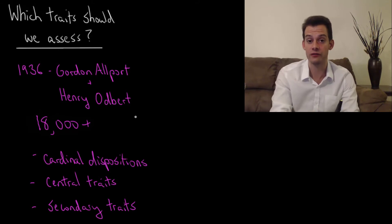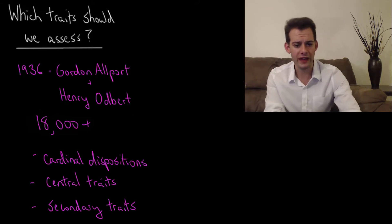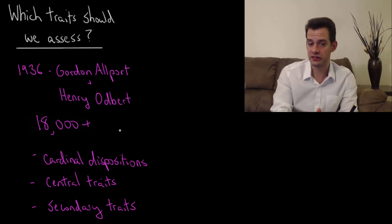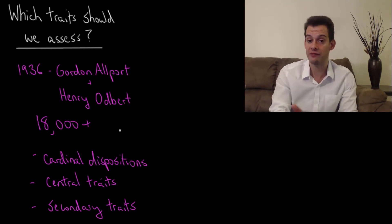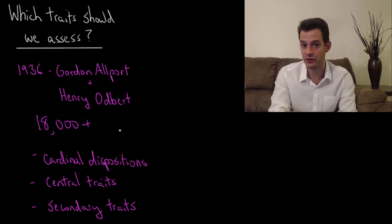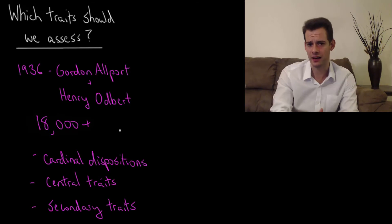Now within these 18,000 there were of course many synonyms and lots of overlap. Allport proposed that we could think about traits as being in a hierarchy in terms of how much they influence a person's personality. We could have cardinal dispositions — traits that influenced almost everything a person does — then central traits that influence a large number of thoughts and behaviors, and lastly secondary traits that influence only a few thoughts and behaviors.